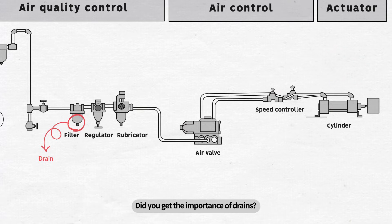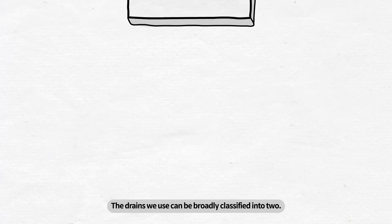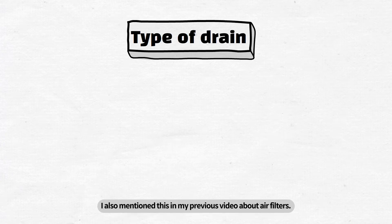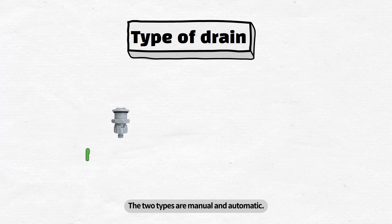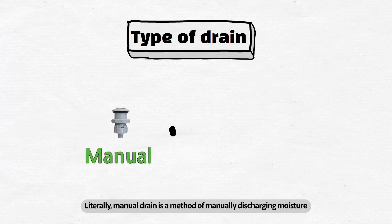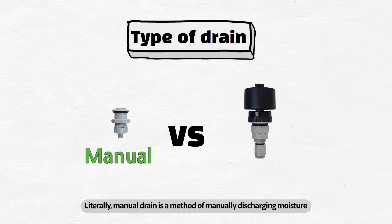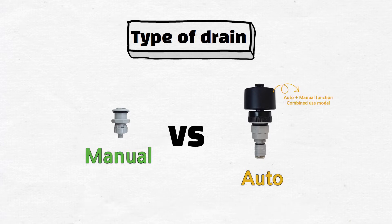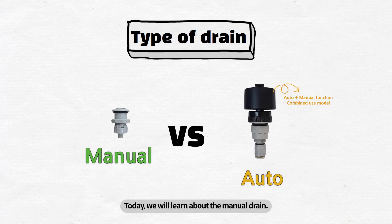Did you get the importance of drains? The drains we use can be broadly classified into two. I also mentioned this in my previous video about air filters. The two types are manual and automatic. Manual drain is a method of manually discharging moisture and foreign substances, while the automatic drain is done vice versa. Today, we will learn about the manual drain.